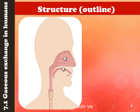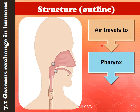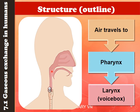Once air has been warmed, moistened, and filtered, it then travels through the pharynx. The pharynx is the location where the digestive system — that is the oesophagus — meets with the respiratory system; the trachea is in front and the oesophagus at the back. From the pharynx, air travels down to the larynx. The unscientific term for larynx is the voice box — it is not so visible in women, but in men you can see a bulge at their neck. The larynx is bigger in males, which is why their voice is deeper compared to females.